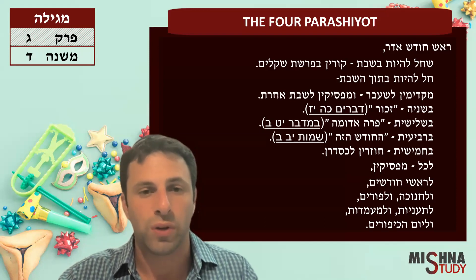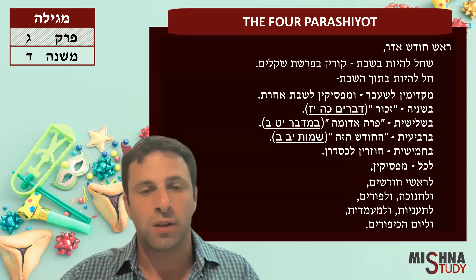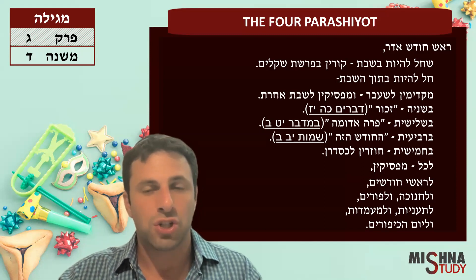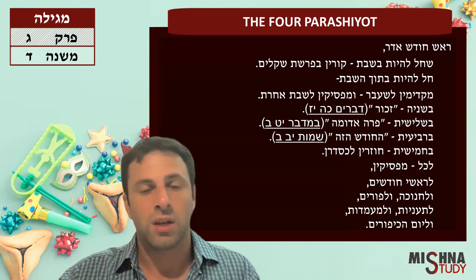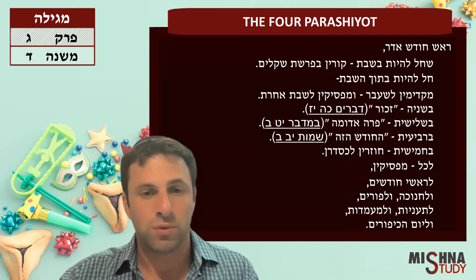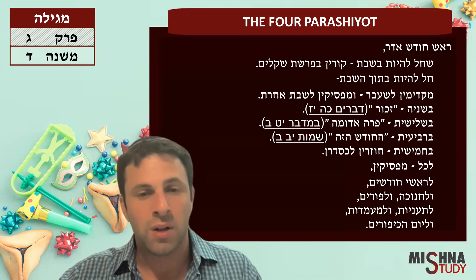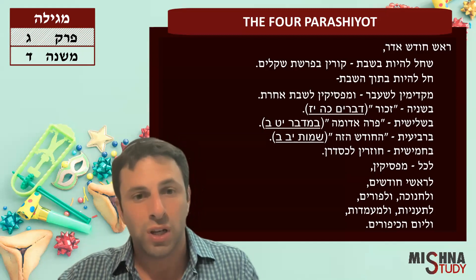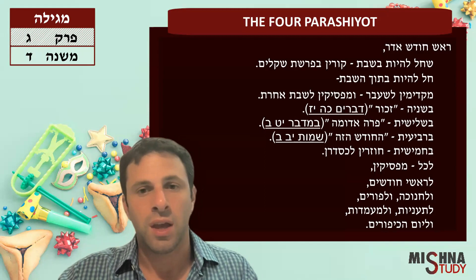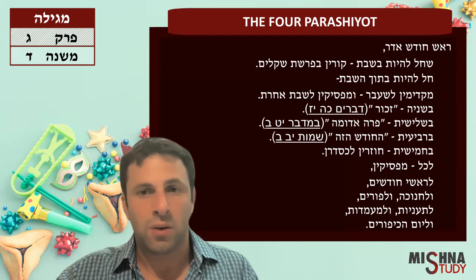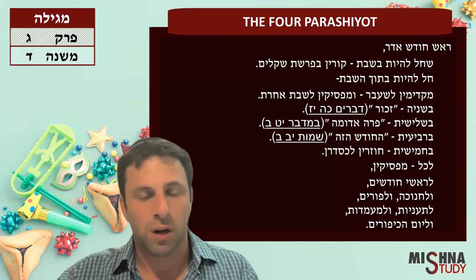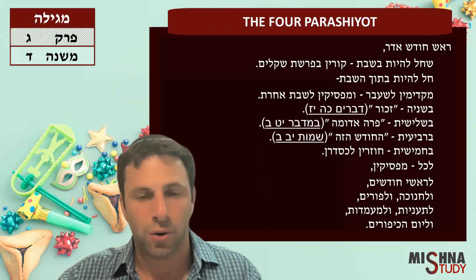How do we read these Parashiyot? When do we read them? From our Mishnah, Parashat Shekalim — if Shabbat falls out on Rosh Chodesh, then we read Parashat Shekalim. If not, and Rosh Chodesh falls out the week before, then we read Parashat Shekalim before Chodesh Adar. Then we skip a week, and the next week is Parashat Zachor, then Parashat Parah, then Parashat HaChodesh.